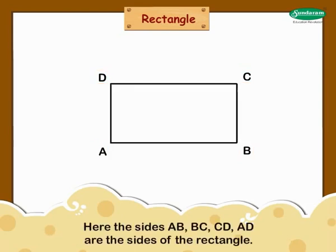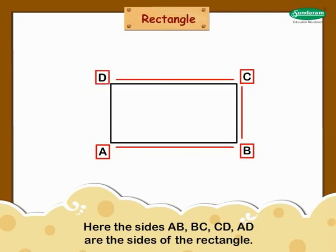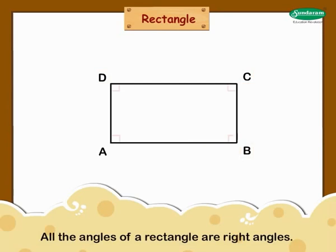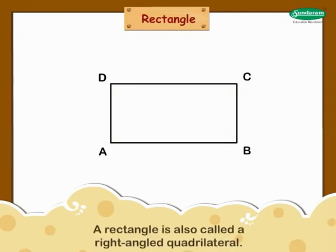The sides are ab, bc, cd, and ad — these are the sides of the rectangle. The opposite sides of the rectangle are of equal length. All the angles of a rectangle are right angles. A rectangle is also called a right-angled quadrilateral.